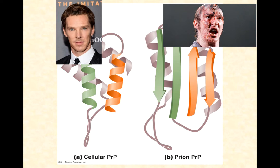Imagine a protein that's supposed to help with nerve signaling suddenly can't do that anymore — you lose an important piece of brain biochemistry. There are two ways cellular PRP can become prion PRP. First, cellular PRP can spontaneously misfold into prion PRP, but fortunately there are mechanisms in place to prevent that, making it extremely rare. The more common way is for another prion protein to come into physical contact with a healthy cellular PRP and actually rearrange and refold it into the prion form.